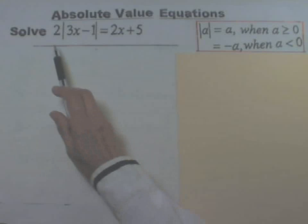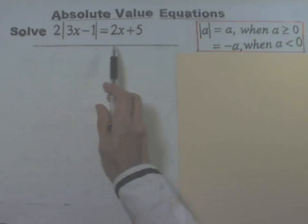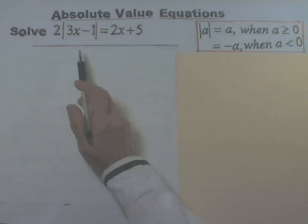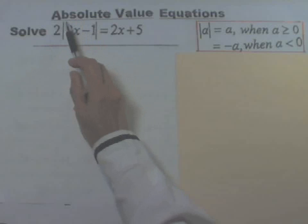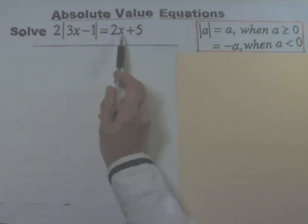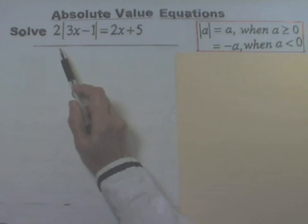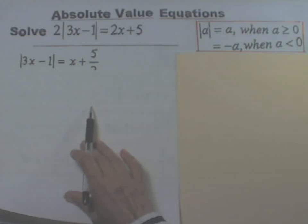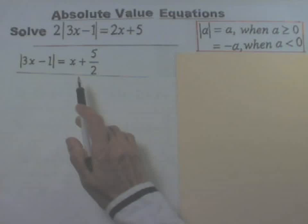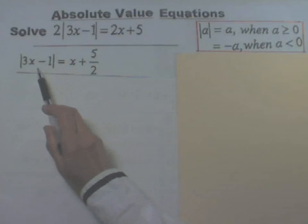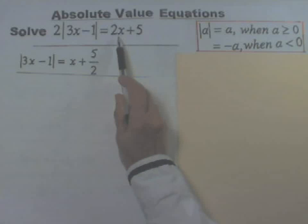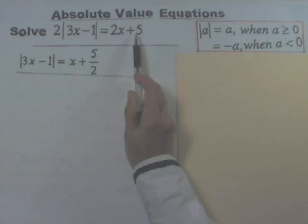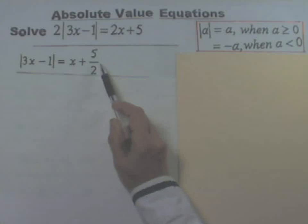If you are asked to solve an absolute value equation of this type, the first thing you need to do is isolate the absolute value part. To do that, you need to divide both sides by that 2. If you do that, you divide this side by 2 and get the absolute value of 3x minus 1. When you divide this side by 2, remember to divide both terms by 2. So 2x over 2 gives you x, plus 5 over 2.